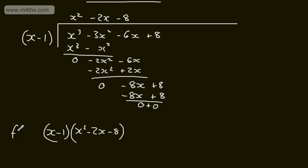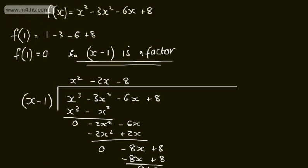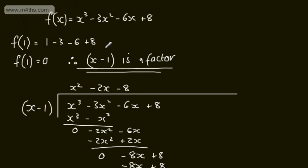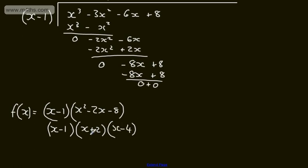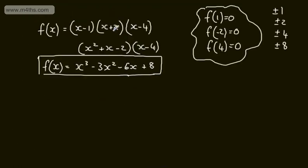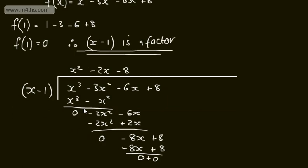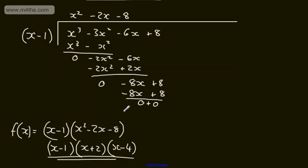We can now express the cubic as x minus 1 multiplied by the quadratic x squared minus 2x minus 8. Since f(1) equals 0, by the factor theorem x minus 1 is a factor. The quadratic factors further, giving us x minus 1 times x plus 2 times x minus 4 — exactly back to where we started. We can now express this as the product of three linear factors.